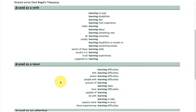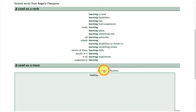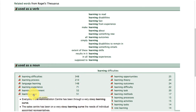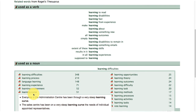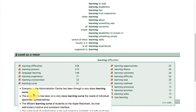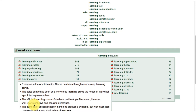Then we've got 'learning' as a noun — so 'learning difficulties', occurring 348 times in the corpus. And 'learning curve' — so 'a very steep learning curve'. Steep and learning curve tend to collocate often. We also see 'efficient learning curve' and 'shallow learning curve'.